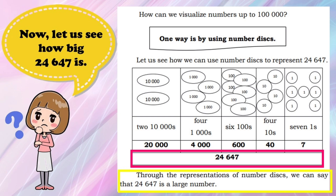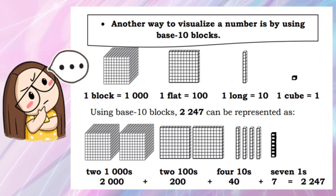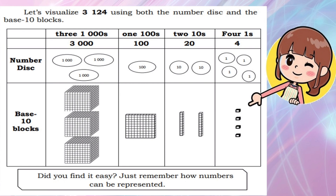Another way to visualize a number is by using base-10 blocks. As you can see in the illustration: one block is equal to 1,000; one flat is equal to 100; one long is equal to 10; and one cube is equal to 1. Using base-10 blocks, 2,247 can be represented as two blocks, two flats, four longs, and seven cubes.